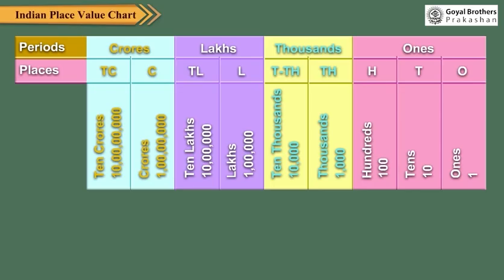In this place value chart, the nine places are grouped into four periods. These are Ones, Thousands, Lakhs, and Crores.